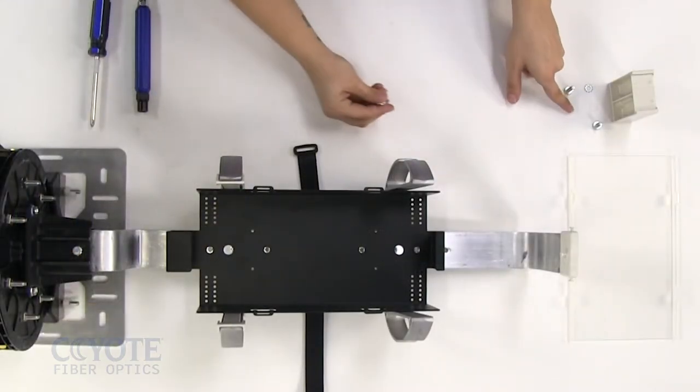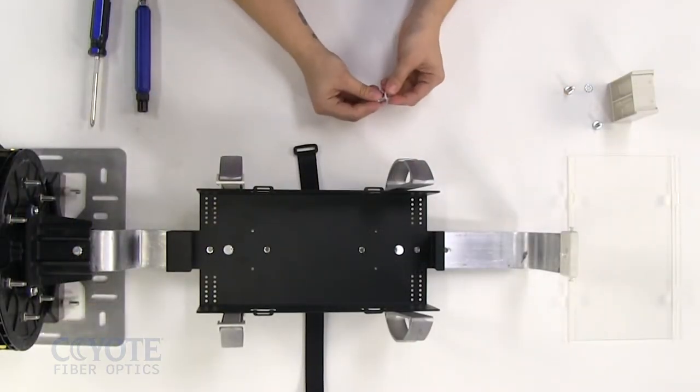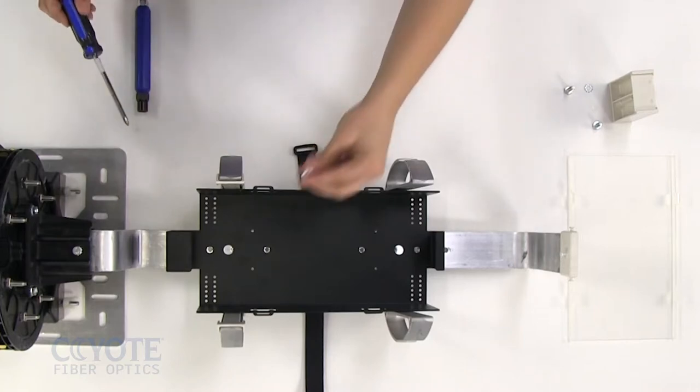Install a nylon washer onto the bolt. Tighten with the flathead or Phillips screwdriver.